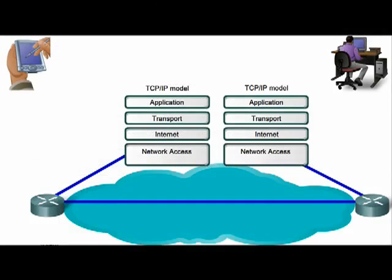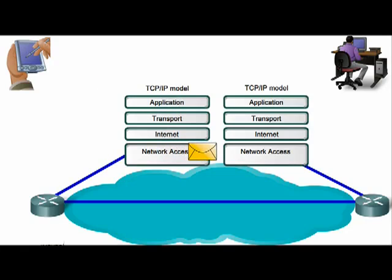Let's look at how the communication process happens as explained in the TCP/IP model. First, the creation of data at the application layer of the source device. Next, segmentation and encapsulation of data as it passes down the protocol stack of the source device. Then, the generation of the data onto the media at the network access layer of the stack, followed by the transportation of the data through the inter-network, which consists of media and intermediary devices such as routers and switches.